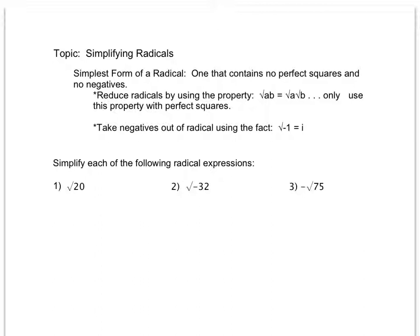What happens if I have a radical that is not a perfect square? Can I simplify that? In order to be in simplest form for a radical, I have to make sure there are no perfect squares or factors of perfect squares, and no negatives. I'm going to always reduce radicals using this property: the square root of a times b equals the square root of a times the square root of b. I only want to use this property with perfect squares.